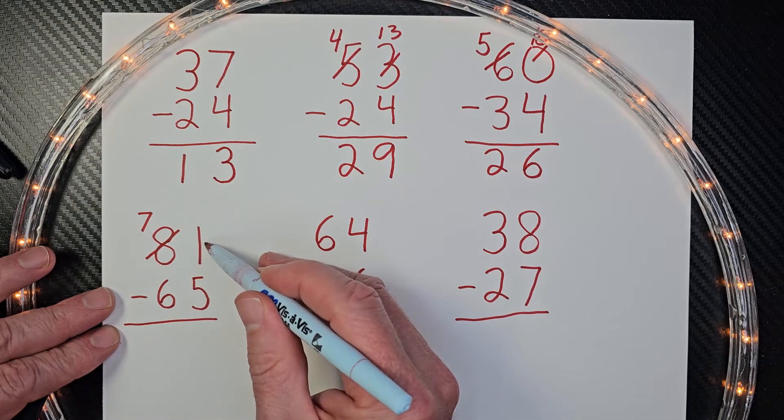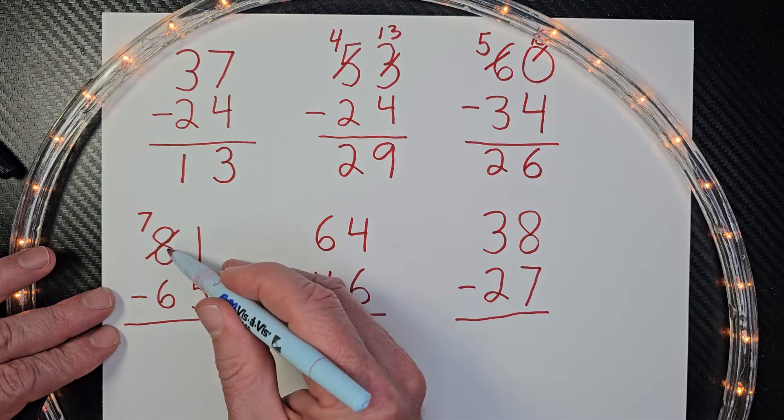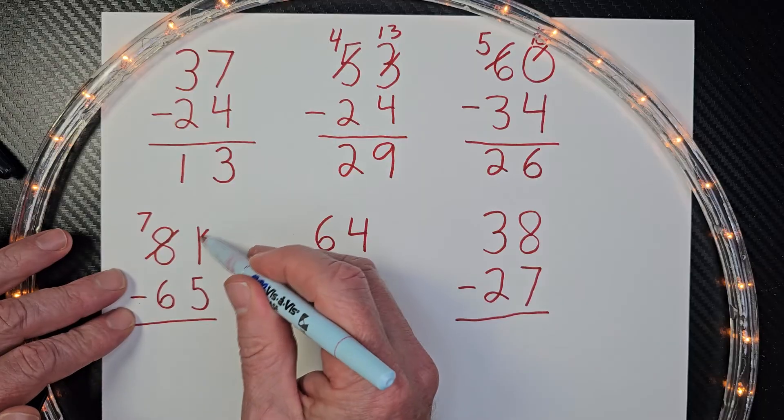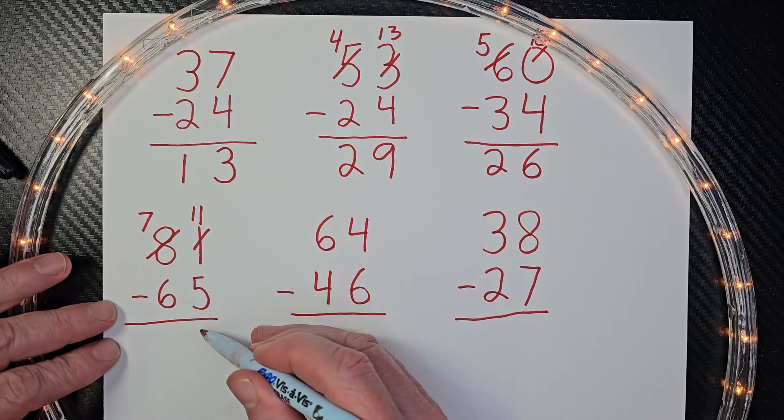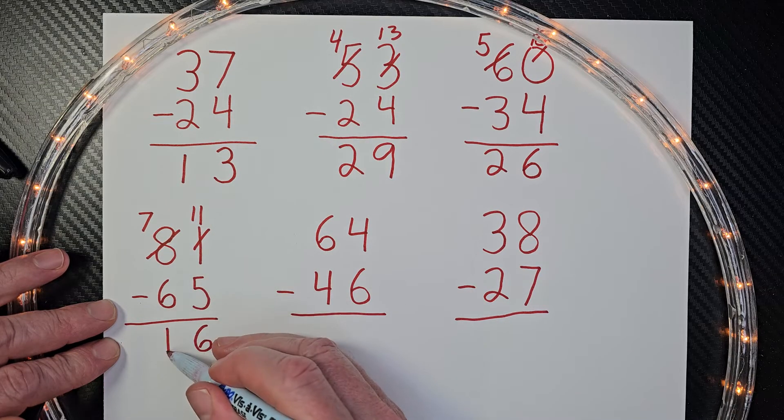And what students sometimes will do is they'll make this one a 10. But no, you're taking a 10 from here and you're adding it to this one, which will make this an 11. So now 11 minus five would equal six. And then seven minus six would equal one.